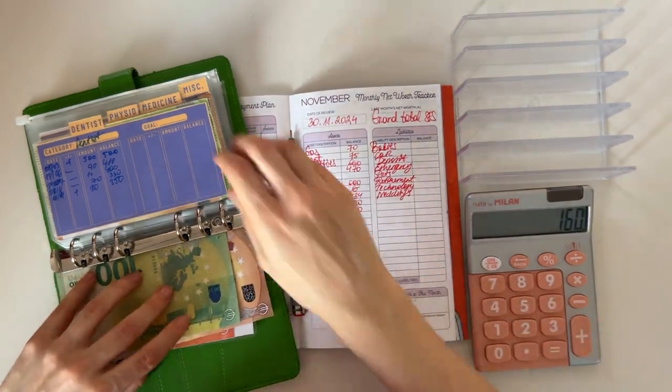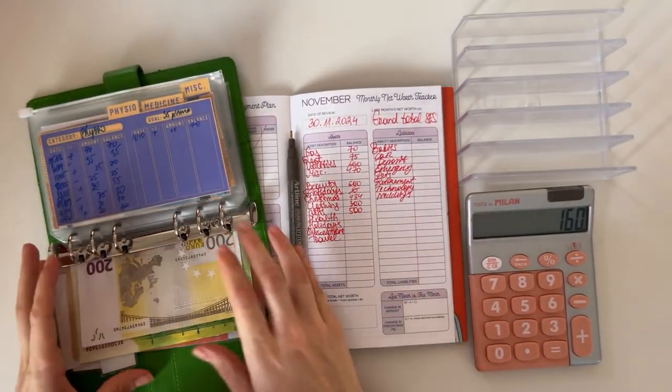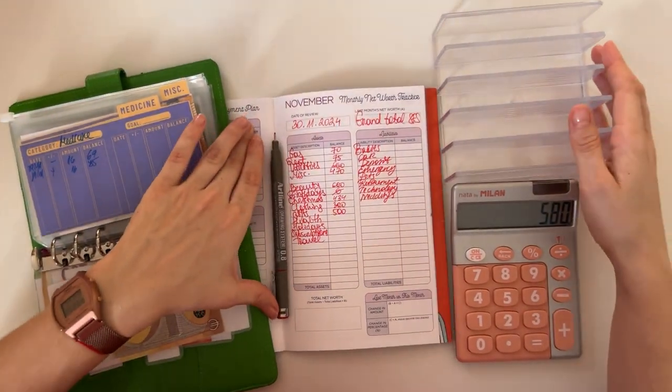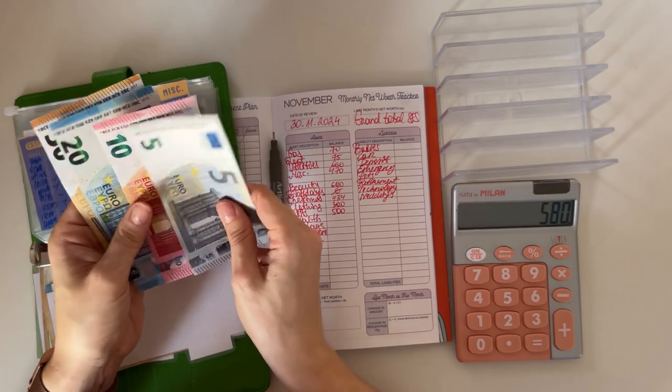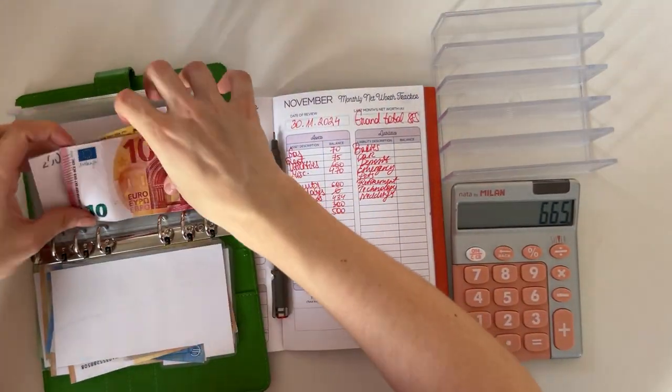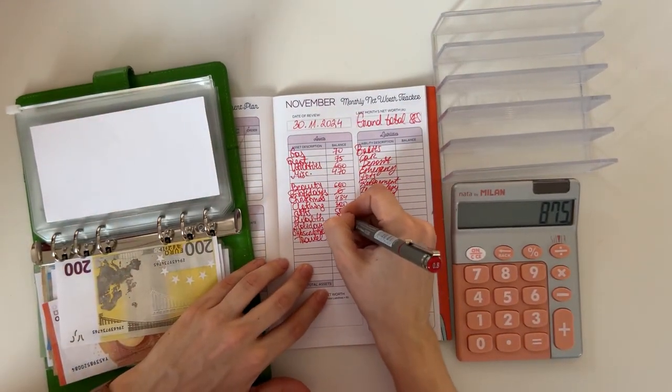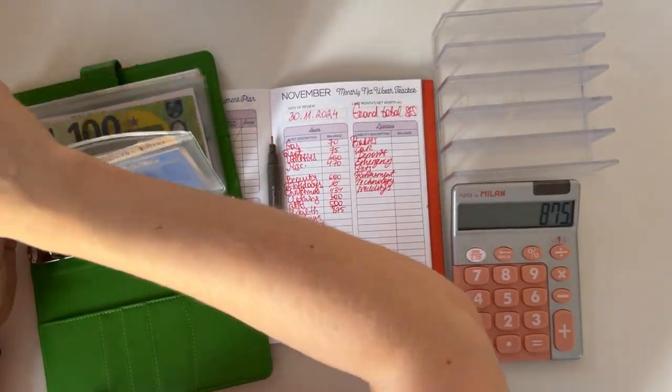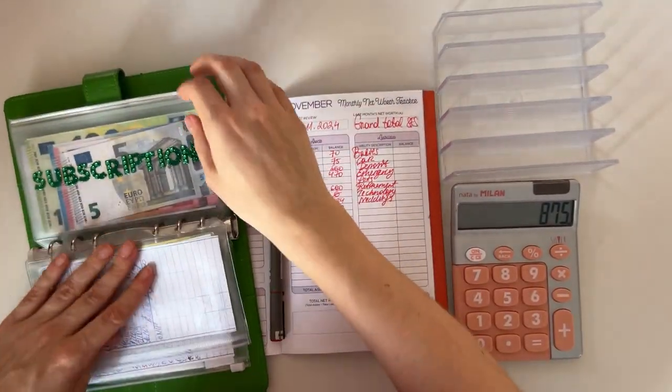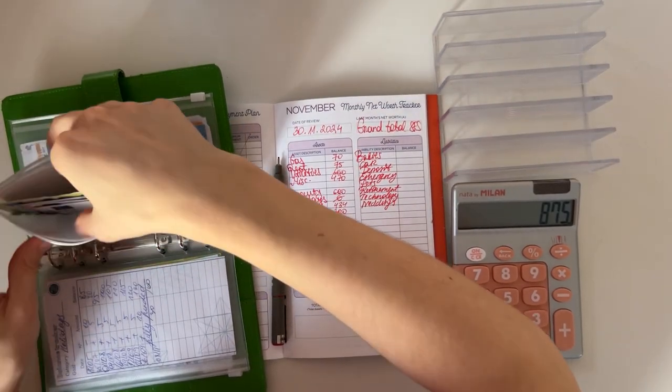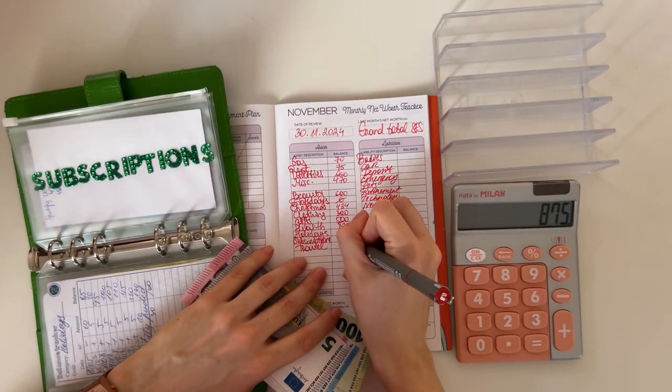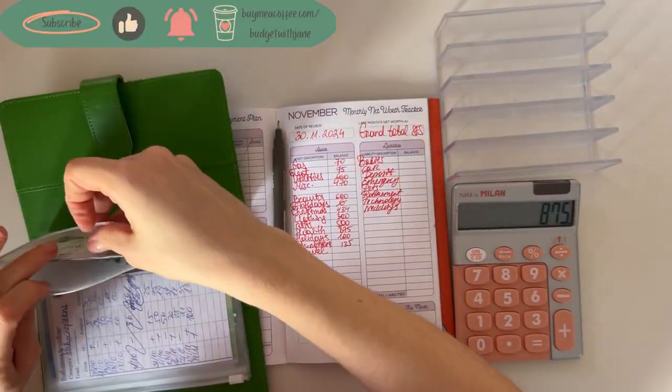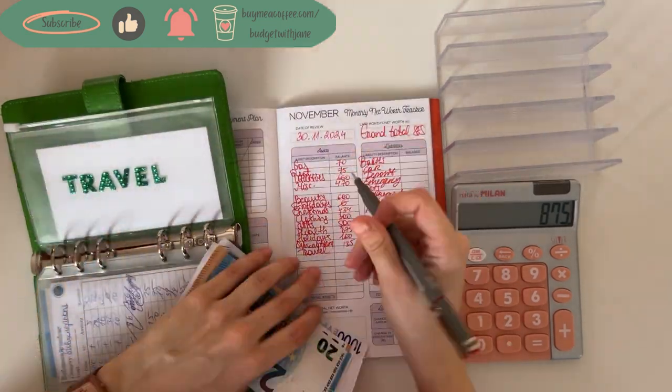We have Johnny Cash next. Health: we have 116, therapy, dentist has 350, physio has 70, medicine has 85, and miscellaneous has 210. So in total that's 875 in health. Perfect. We have holidays with 100, subscriptions have 135, and then travel has 1,570.